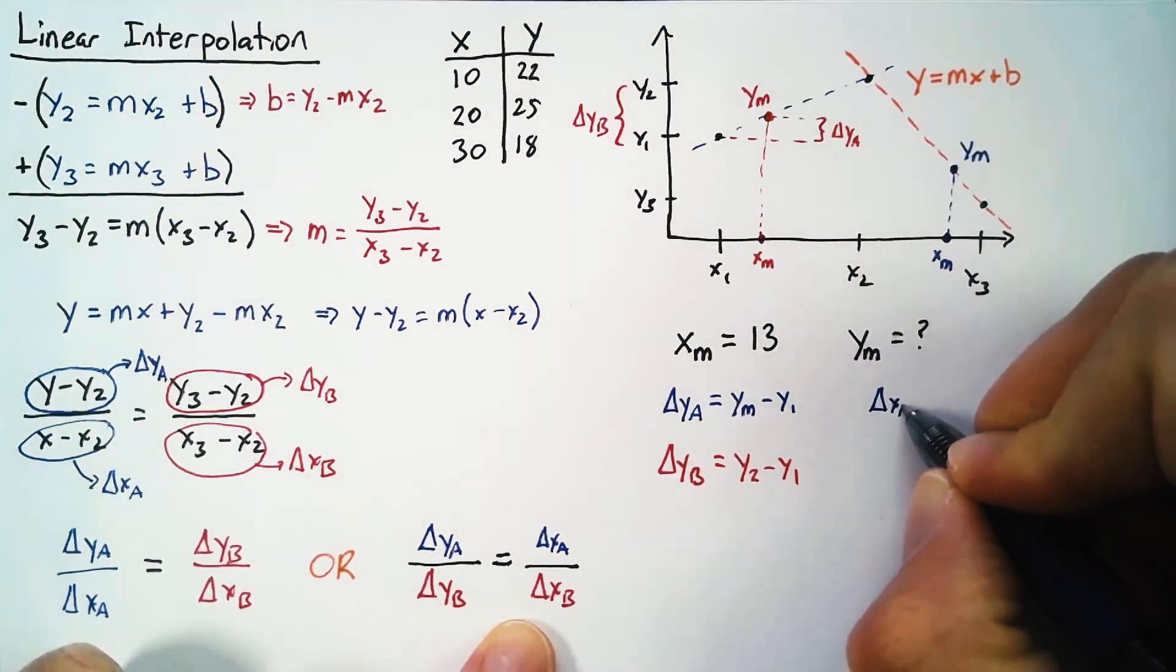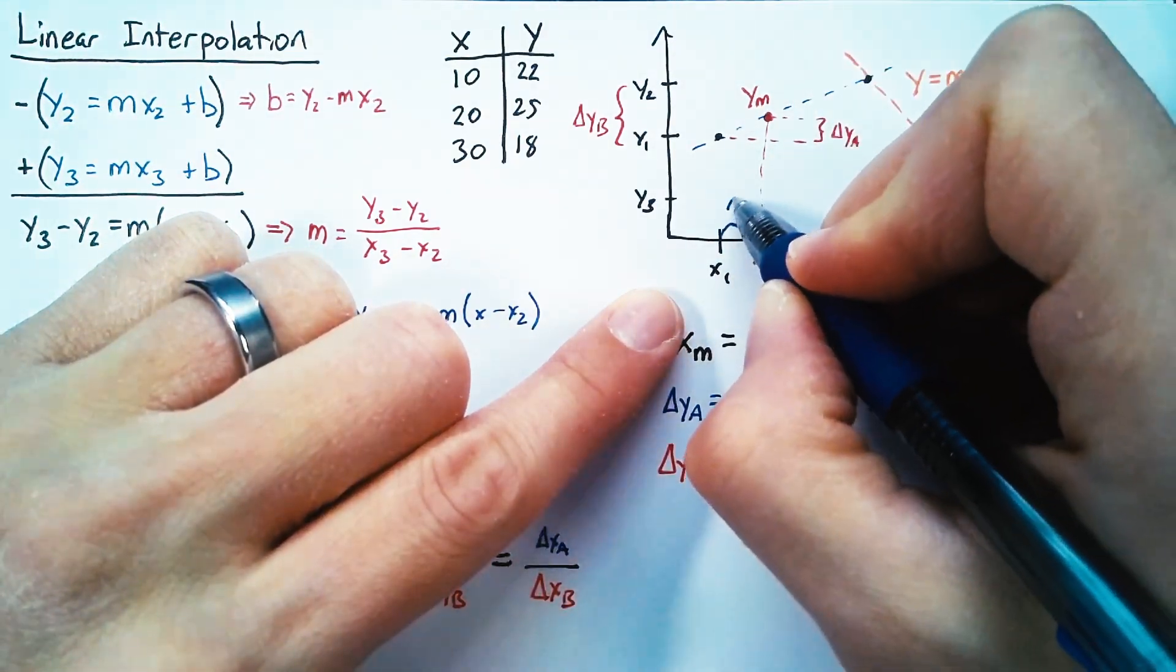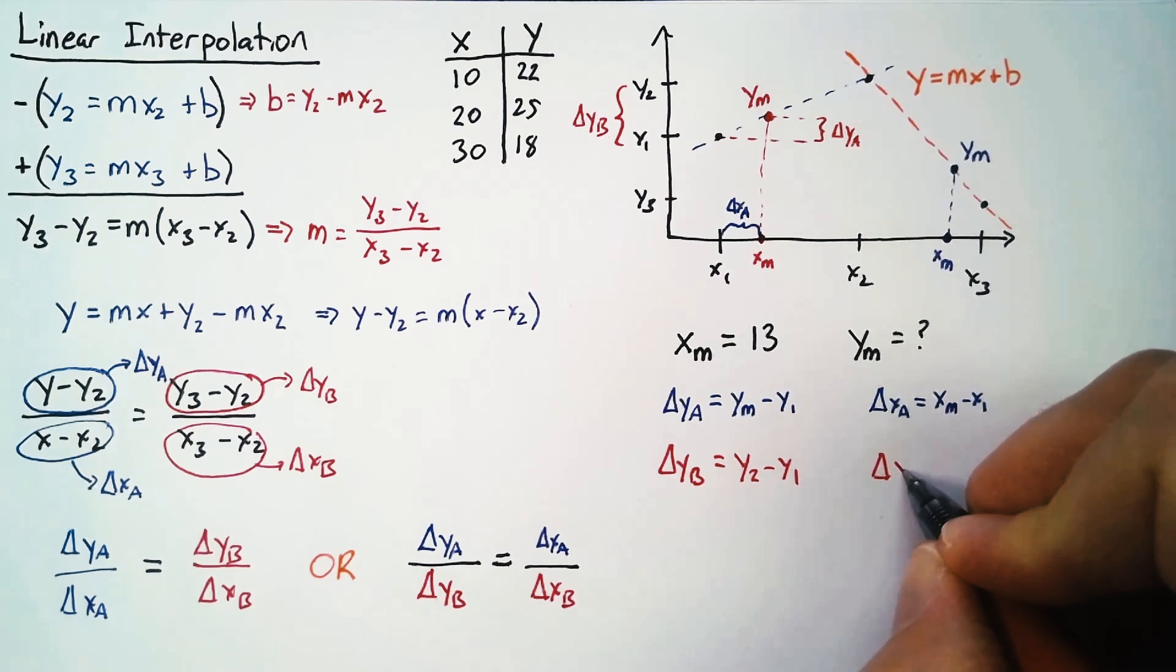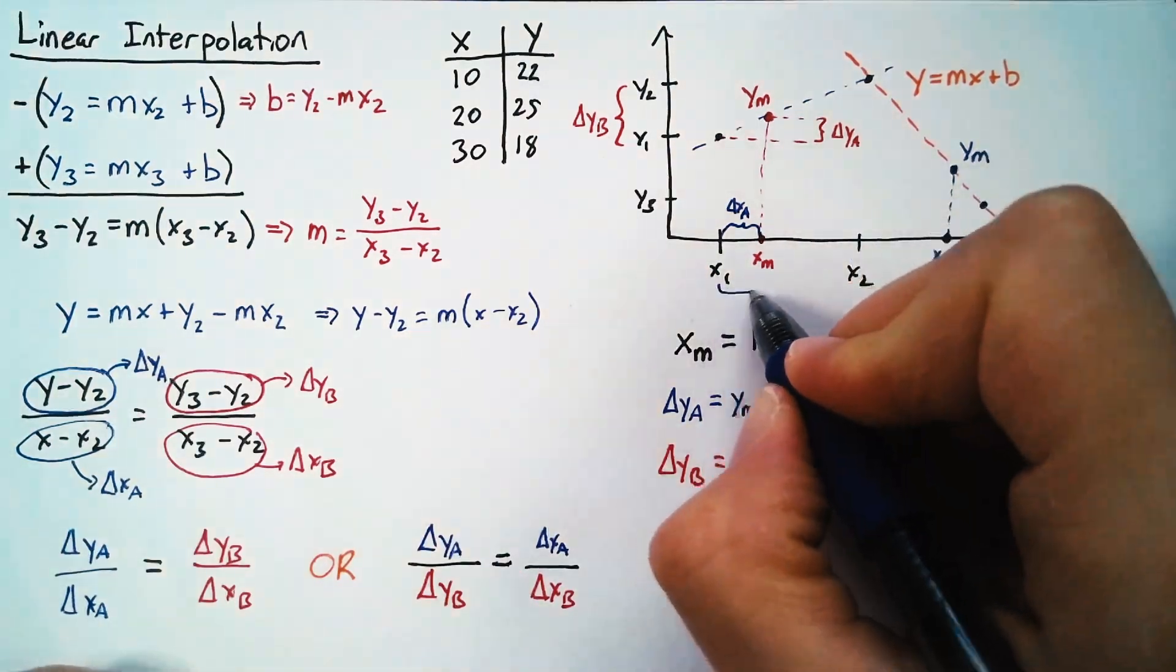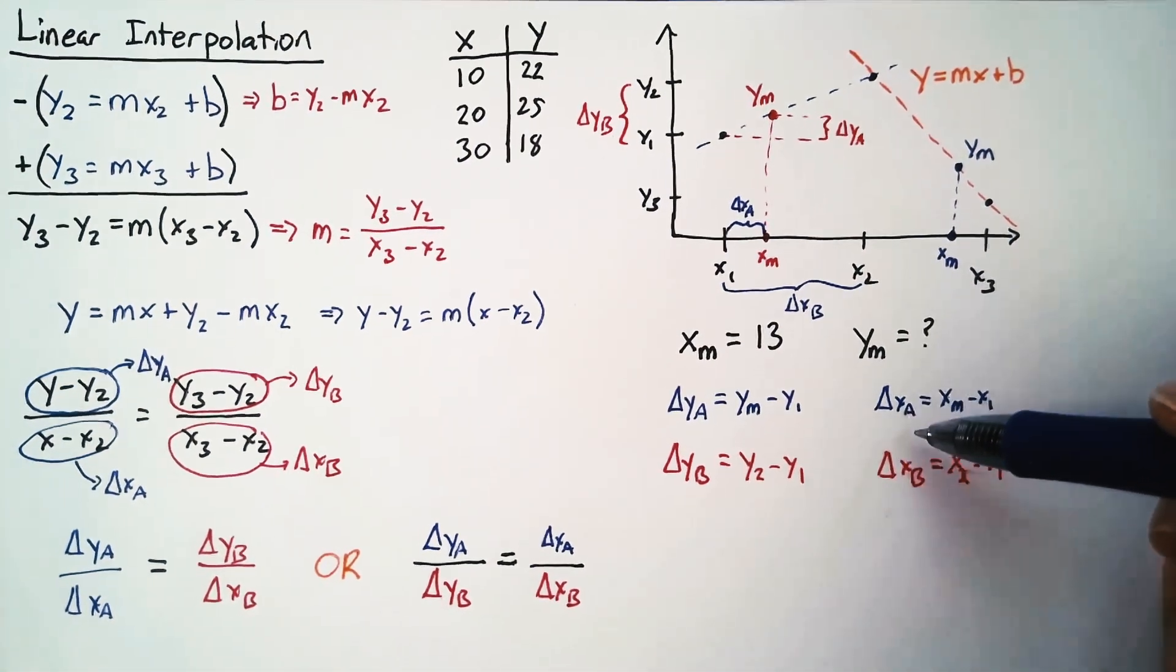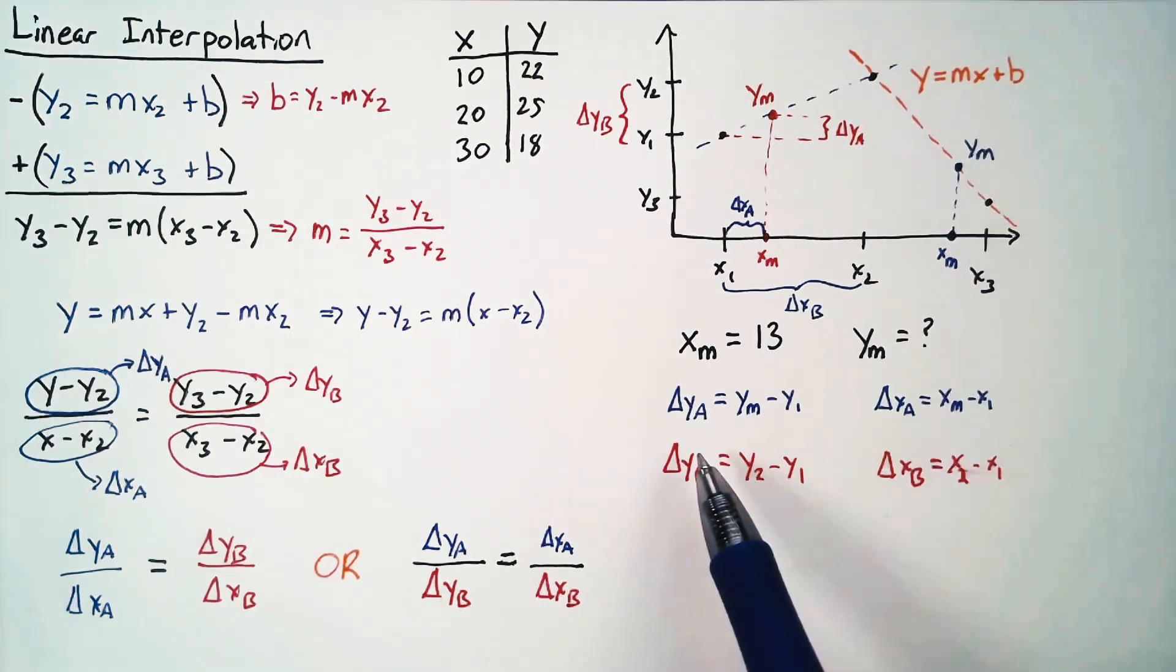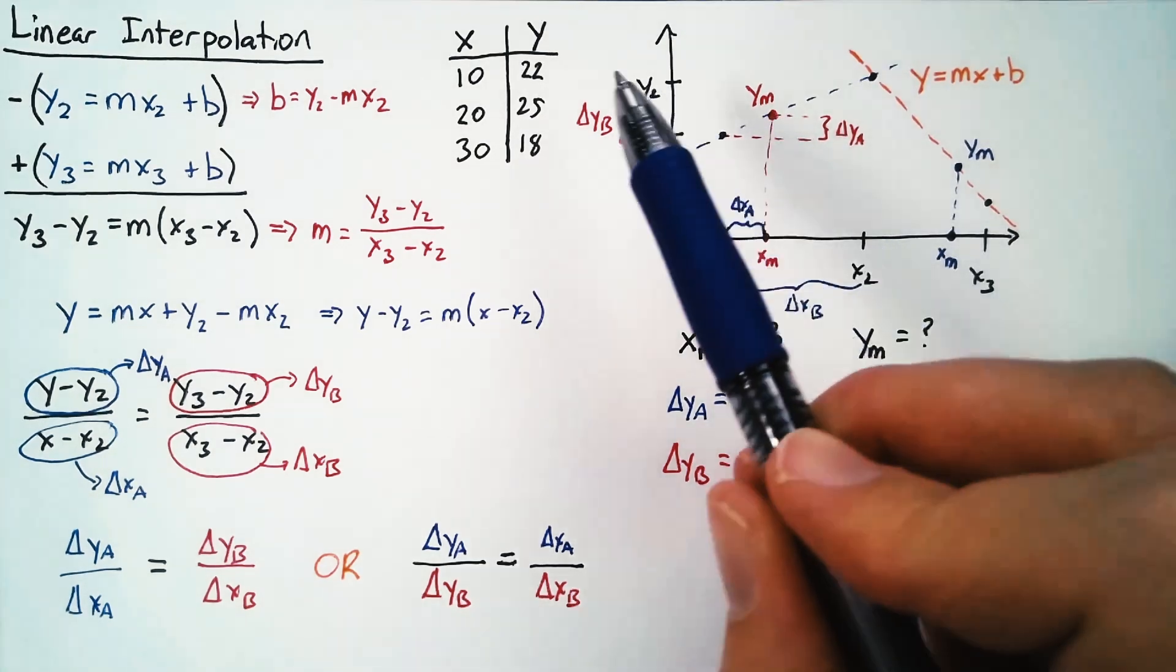All right, now let's look for our delta x values. So again, we want it to be in between these two points. So our delta xa will be here. So this is xm minus x1. And our delta xb is going to be x2 minus x1. And that can be drawn here. So our delta b's are always going to be in between the full range that we can get from the table. The delta a's are always going to link the midpoint with the first point over here.